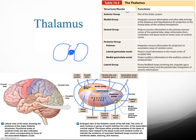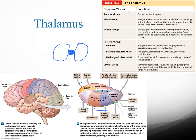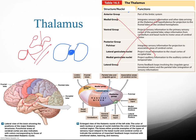The thalamus has several compartments including an anterior group, a medial group, a ventral group, a posterior group, and a lateral group — but you don't need to memorize those functions. What you should know is that about 95% of your sensory information is going to pass through the thalamus, and from there it goes to structures located posterior to the central sulcus.